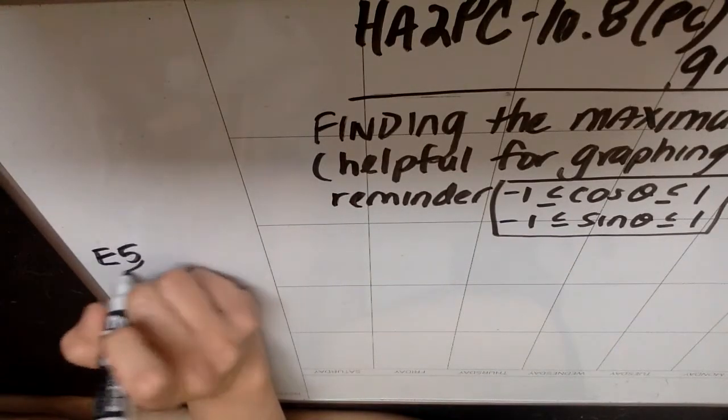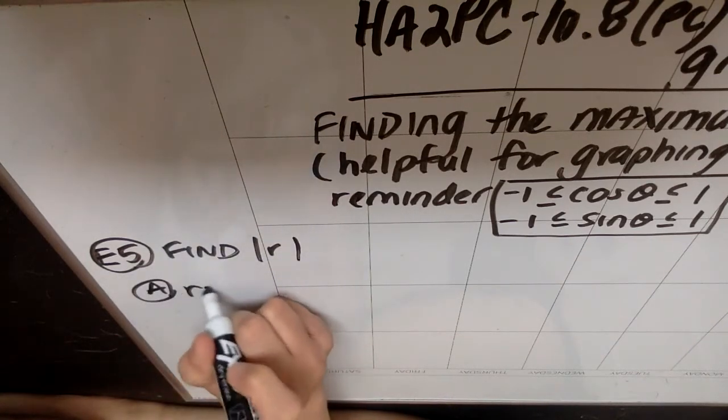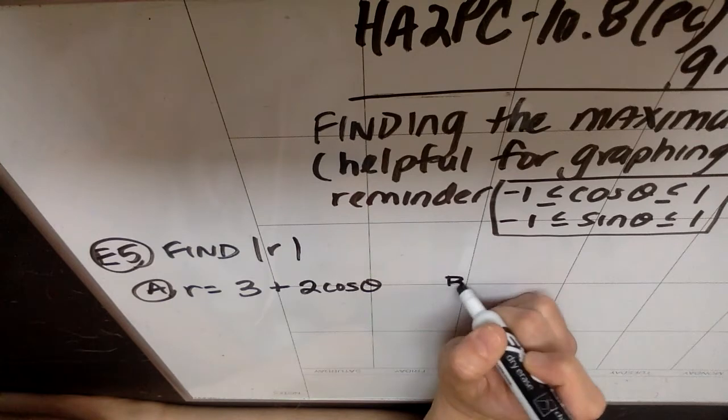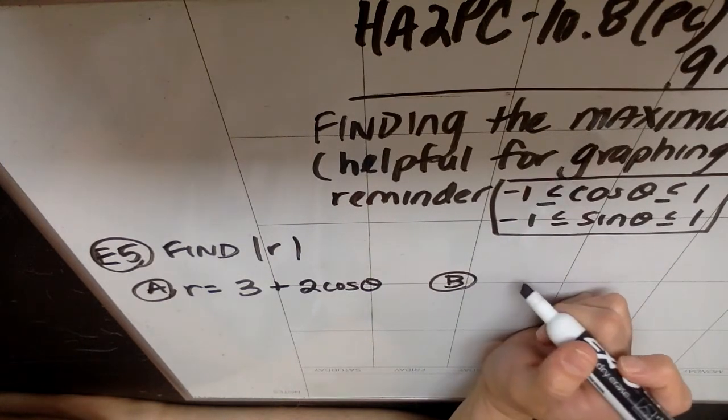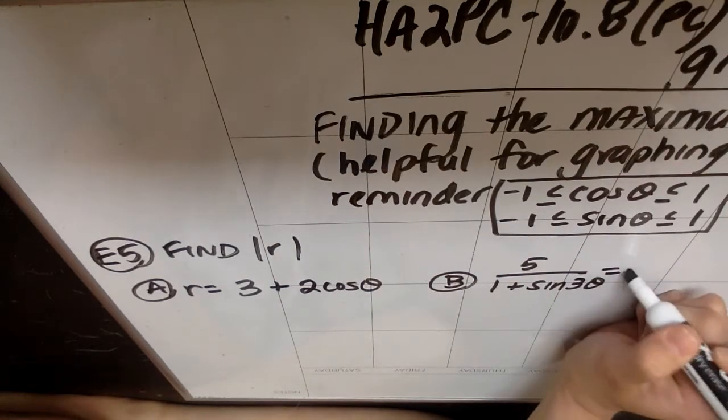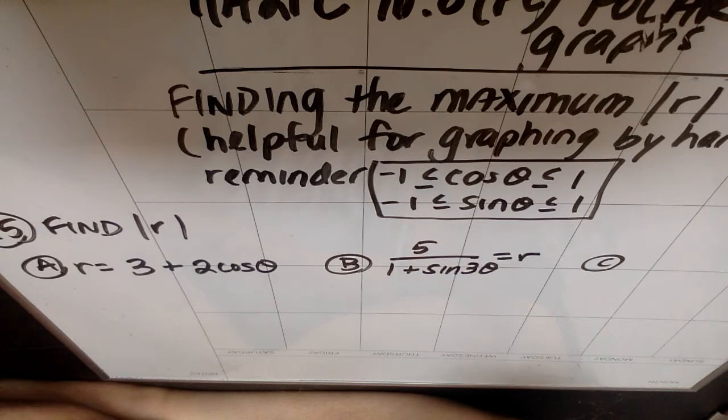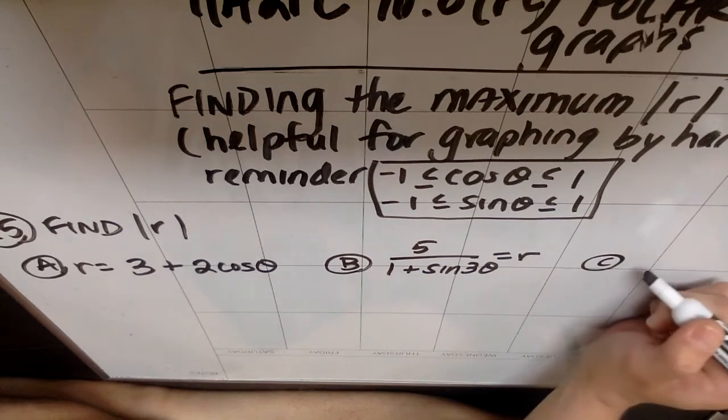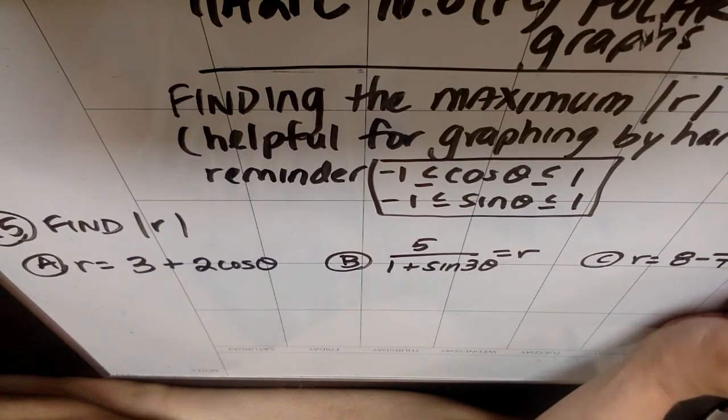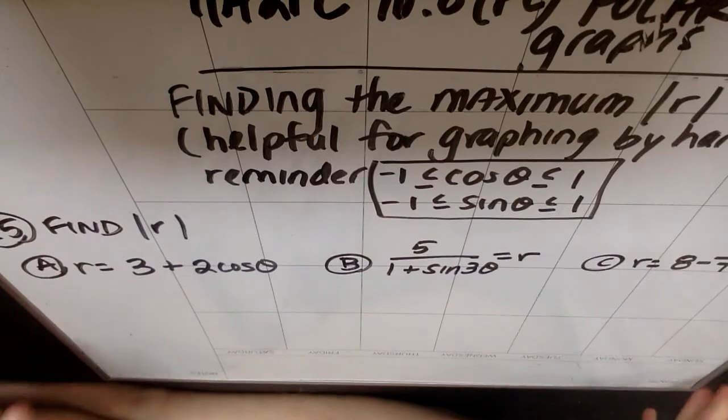So in example 5, I'm going to have us find the biggest possible absolute value of r for each of these functions. So the first one I'm going to give you is r equals 3 plus 2 cosine of theta. The second one we're going to do is 5 over 1 plus sine of 3 theta equals r. The third one we're going to do is r equals 8 minus 7 cosine of 5 theta. Okay, so we're going to walk through these.